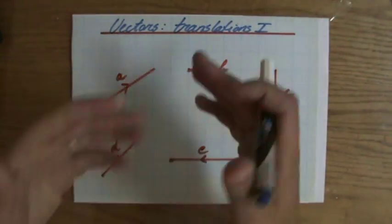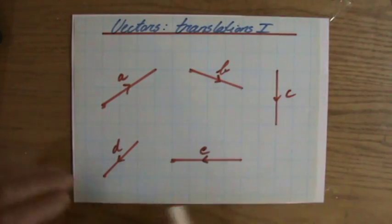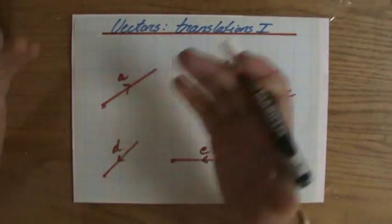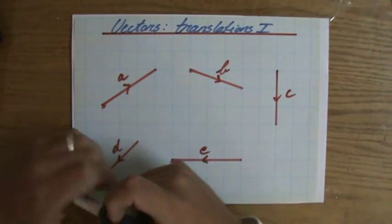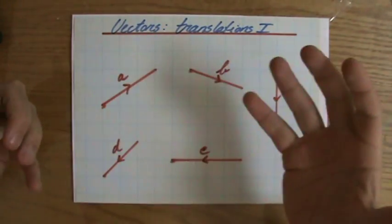We're going to start talking about the translations involving vectors. As you have seen in my previous video, vectors have a particular magnitude and a direction. A translation basically means, in maths anyway, from one point to the other.